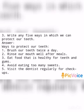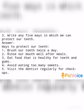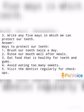Third question: Write any five ways in which we can protect our teeth. Ways to protect our teeth: First, brush our teeth twice a day. Second, rinse our mouth well after meals. Third, eat food that is healthy for teeth and gums. Fourth, avoid eating too many sweets. Fifth, visit the dentist regularly for check-ups.